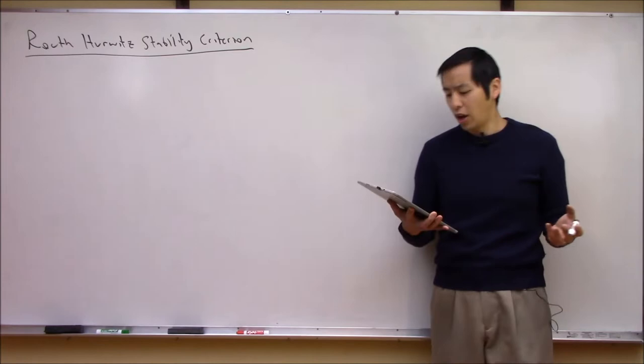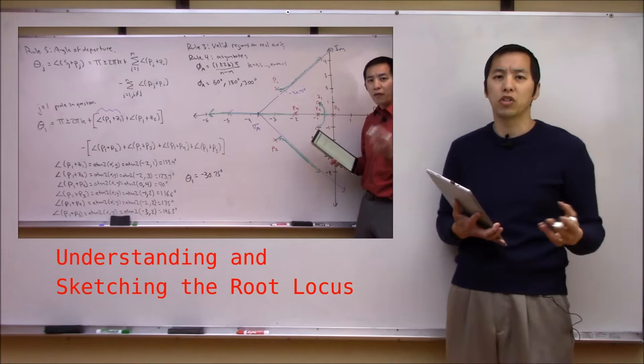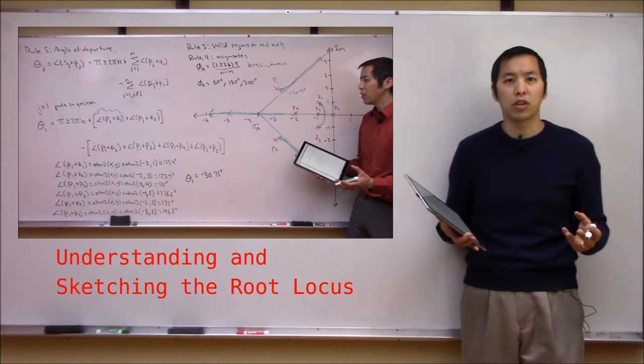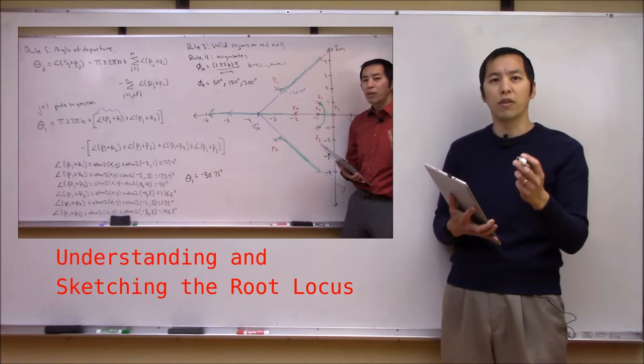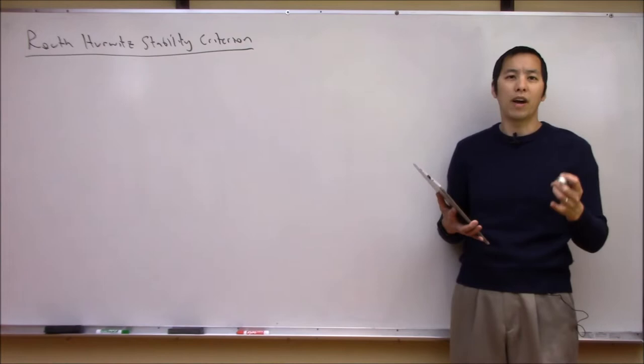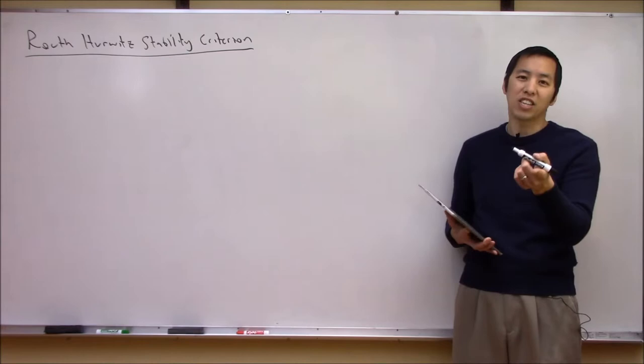The Routh-Hurwitz Stability Criterion typically arises in the context of root locus. From our previous videos on root locus, we developed tools to sketch what the root locus looks like for a given system as we vary the parameter k from zero to infinity. This gives us an idea of where the poles go, but we didn't determine a way to calculate the critical value of k that leads one or more poles into the right-half plane. Routh-Hurwitz gives us a convenient way to determine what value of k yields instability.